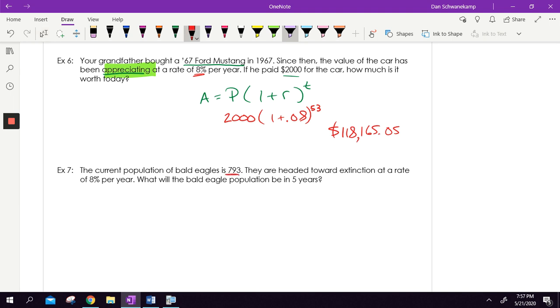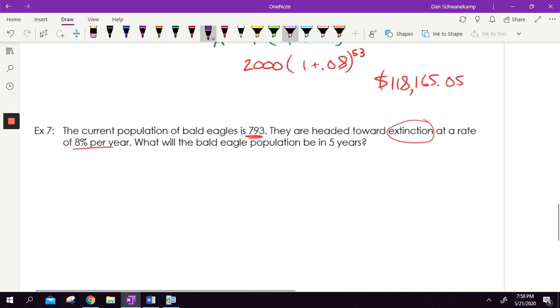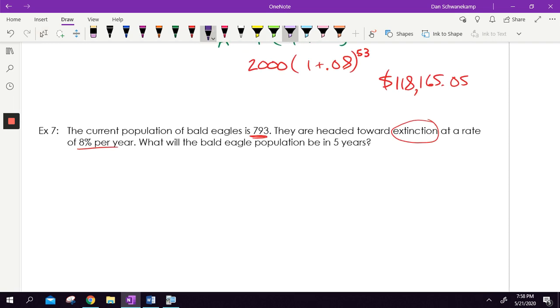Last question. The current population of bald eagles is 793. They are headed towards extinction at a rate of 8% per year. What will the bald eagle population be in five years? Kind of a sad problem. Actually, I think bald eagles are starting to bounce back a little bit. So hopefully this is not a true statement, but let's see. If we're headed towards extinction, is this a growth or a decay problem? Hopefully you realize it is a decay problem. We're getting smaller and smaller. We're doing five years. My population is 793. One minus my rate is 8%. So we're going to go 0.08.